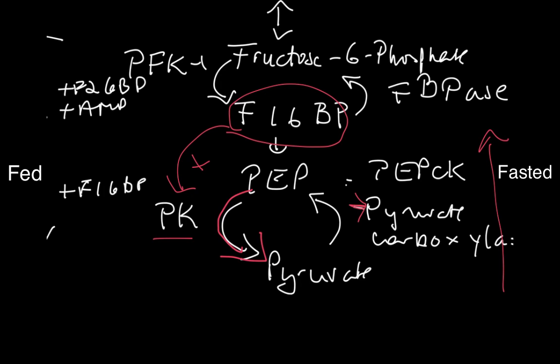Pyruvate carboxylase is positively regulated by acetyl-CoA. And PEPCK is increased at the transcriptional level in the fasted state by glucagon, through cyclic AMP, and through PKA.